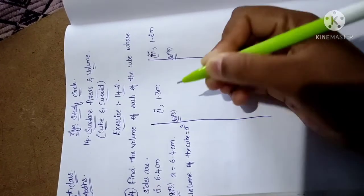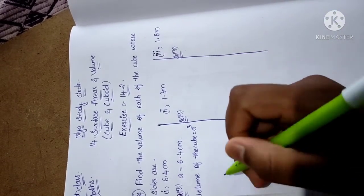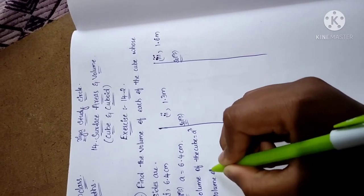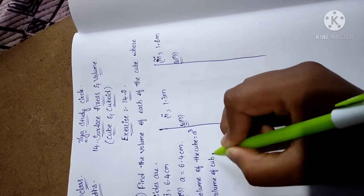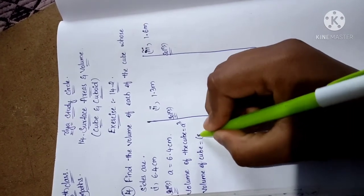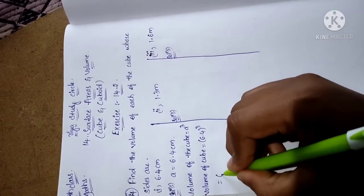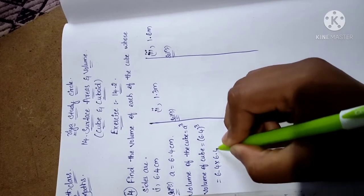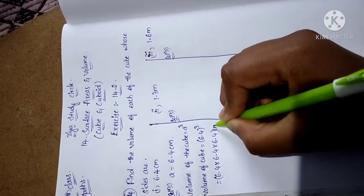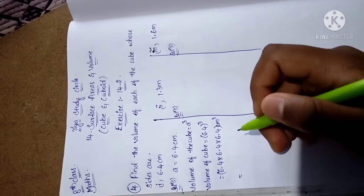equal to a³. Here we have to apply this formula, so volume of cube equals a³. Substitute 6.4 in this formula: 6.4³, that means 6.4 × 6.4 × 6.4 cm³. The multiplication of these three terms is